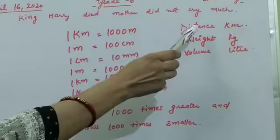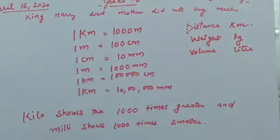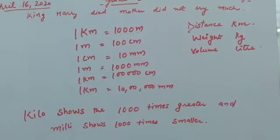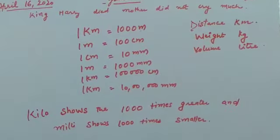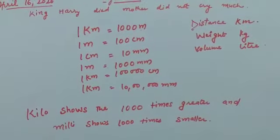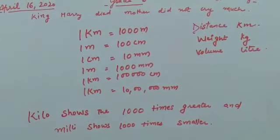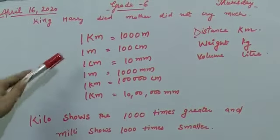Distance: kilometer, meter, centimeter. This shows distance. Weight: kilogram, gram. This shows weight. Liters show the volume. Now come to here.